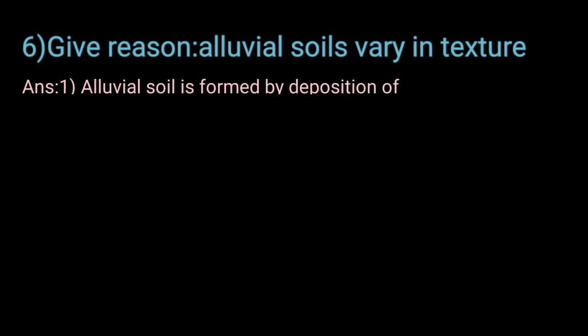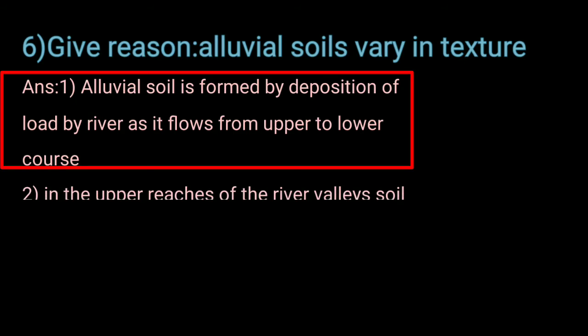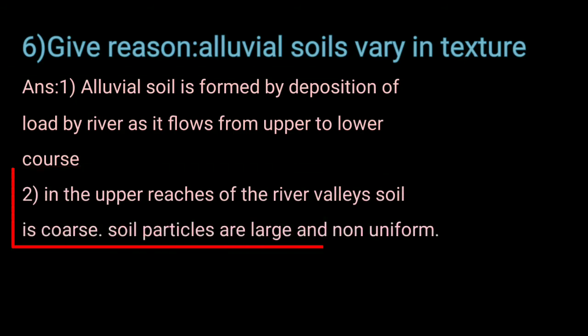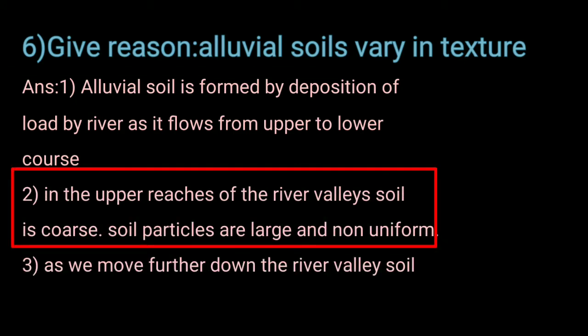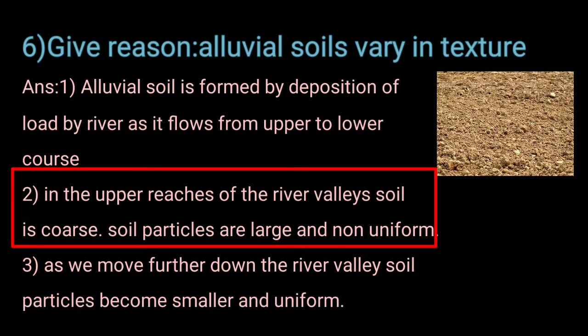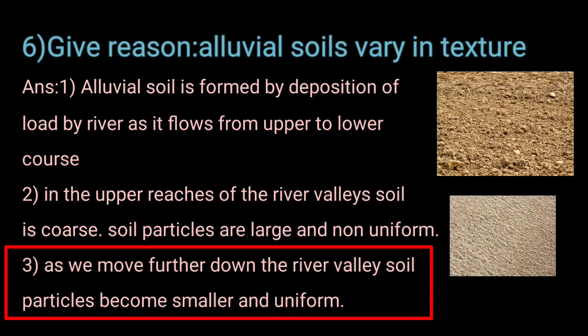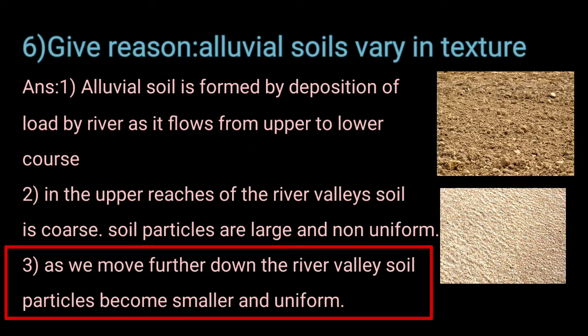Give reason: Alluvial soils vary in texture. Alluvial soils are formed by deposition of load by rivers as they flow from upper to lower course. In the upper reaches of the river valley, soil is coarse and soil particles are large and non-uniform. As we move further down the river valley, soil particles become smaller and uniform.